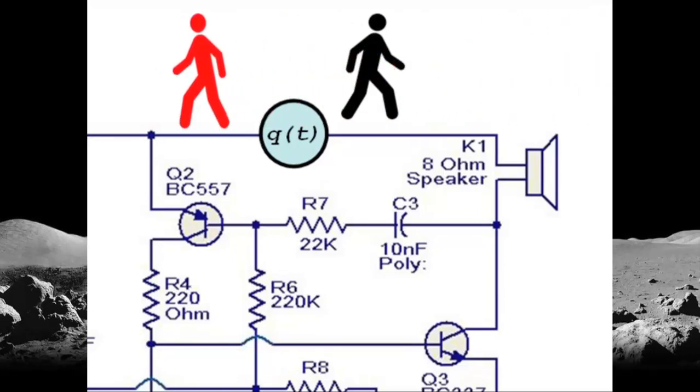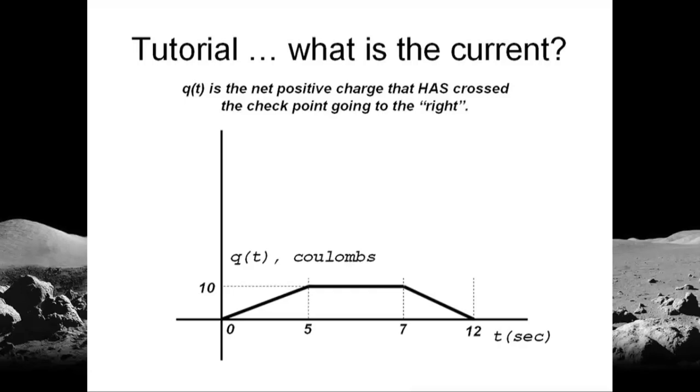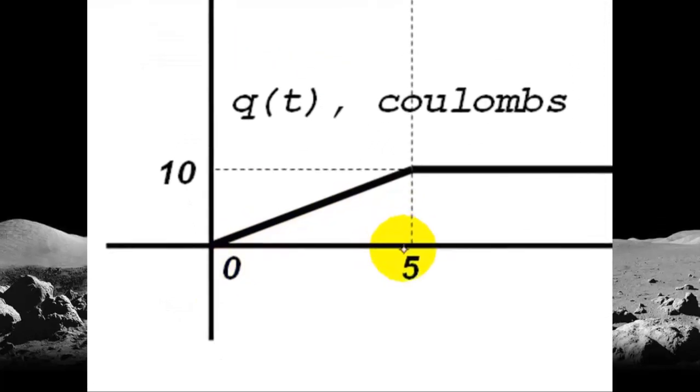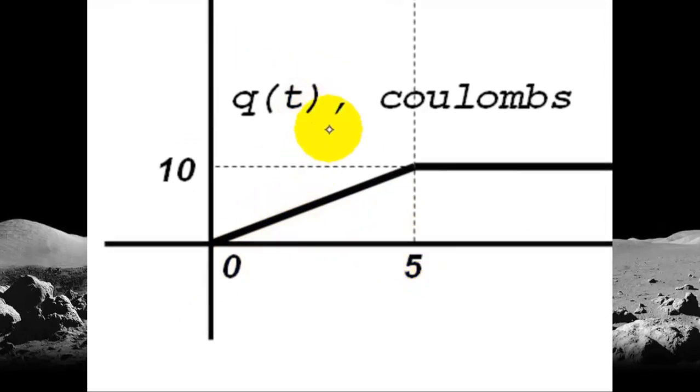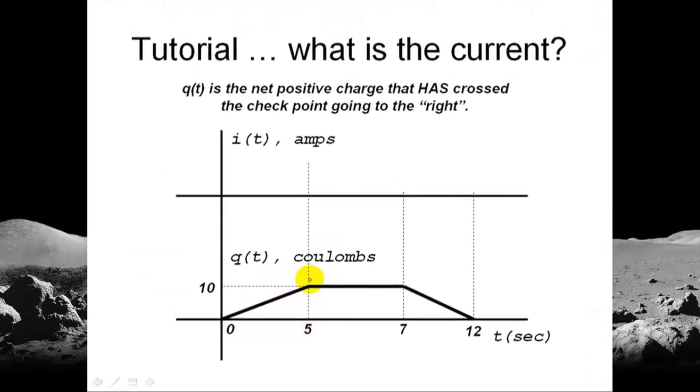Let's have a little bit of a tutorial. What is the current in this case? We are given q as a function of time. In here, we will plot the current as a function of time. From 0 to 5 seconds, the slope of this q of t graphic is constant. It is 10 coulombs divided by 5 seconds. The slope is 2 coulombs per second. That is, 2 amps. Let's plot that up here. The current from 0 to 5 seconds is 2 amperes.